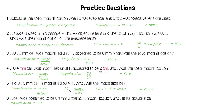For the last question we use the same equation again. We know the magnification is 20 times and the image size is 0.1 millimetres. 20 equals 0.1 over the actual size, and if we rearrange that we find the actual size is 0.1 over 20 millimetres. 0.1 over 20 is 0.005 millimetres, which is the actual size of the cell.